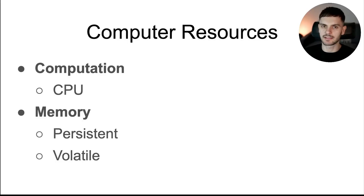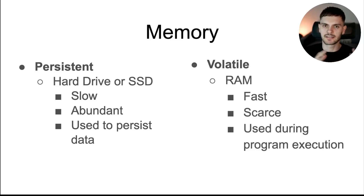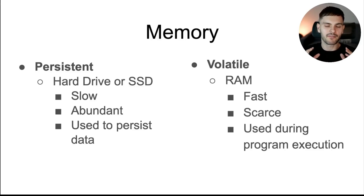An example of persistent memory is a hard drive or a solid state drive. An example of volatile memory is RAM, or random access memory. Note that volatile memory is sometimes called main memory or working memory, while persistent memory is called secondary memory. Reading and writing from persistent memory is slow, while reading and writing from volatile memory is fast — orders of magnitude faster. On the other hand, persistent memory is abundant while volatile memory is scarce. Think about your computer: you might have a two terabyte hard drive but only 16 gigabytes of RAM.